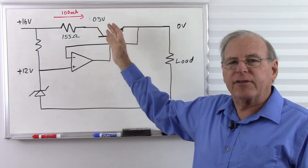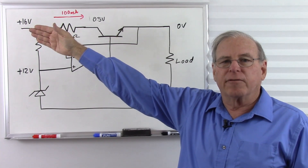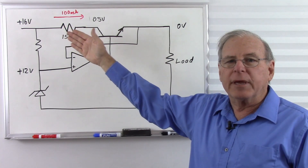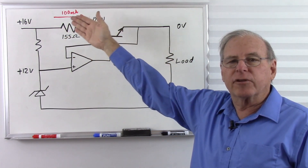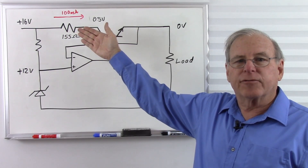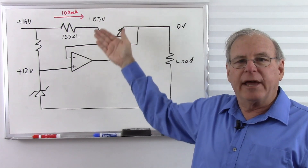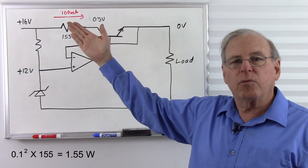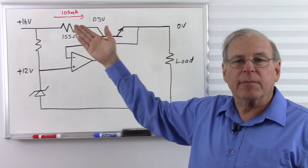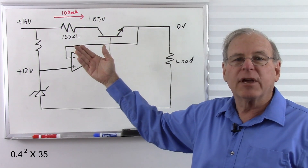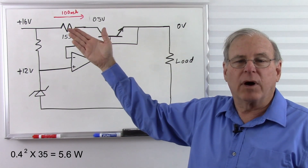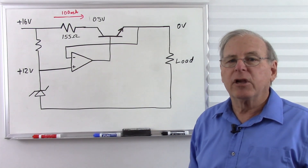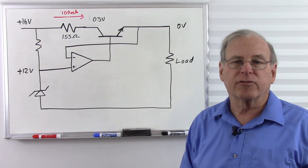A disadvantage of this collector resistor design is that it must be designed around a particular voltage from the rectifier and filter and a particular output voltage. If those change — especially if we want a variable output — this won't work well, because changing the output voltage changes the needed resistor value. We also need to consider power dissipation: with 100 milliamps and 155 ohms, squaring the current and multiplying by resistance gives 1.55 watts, requiring a 2 watt resistor. With the 400 milliamp maximum and 35 ohms, that becomes 5.6 watts, requiring a 10 watt resistor — and it gets larger as we increase voltage or current.